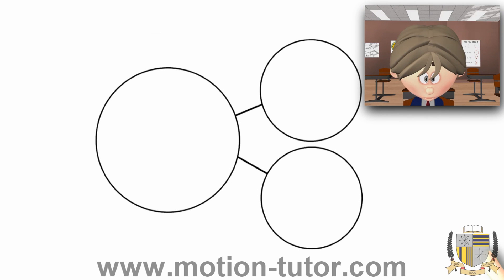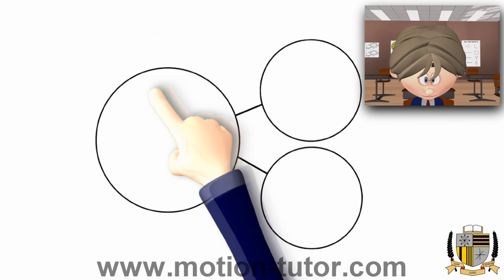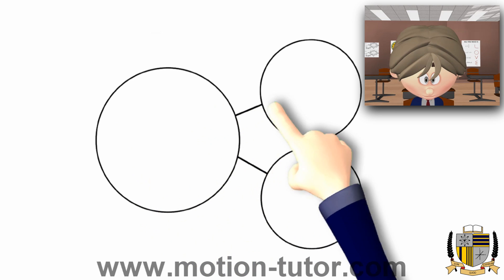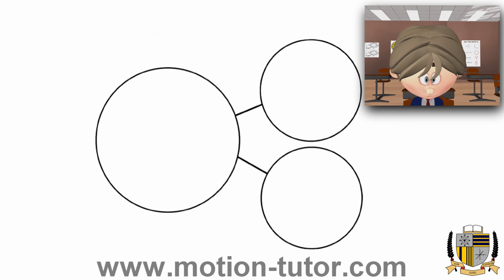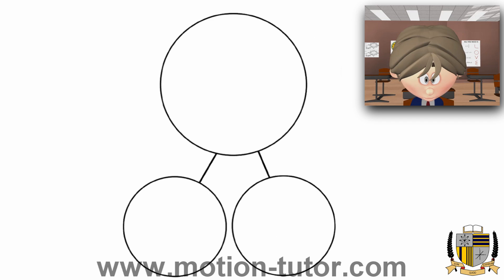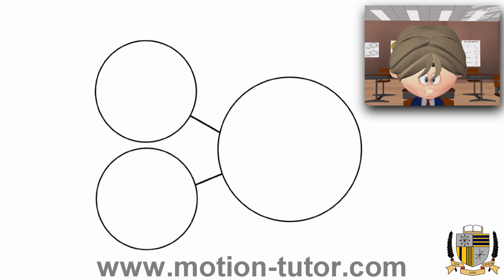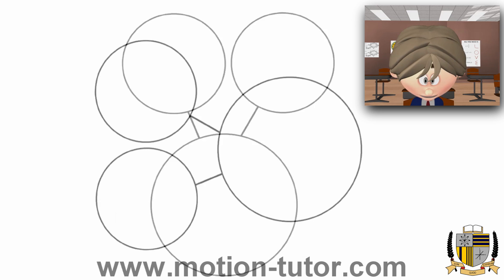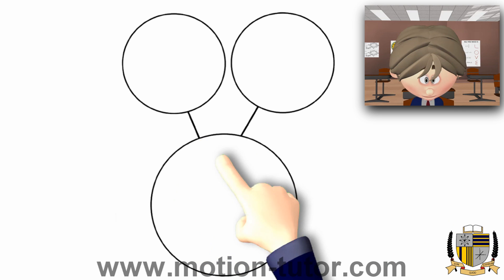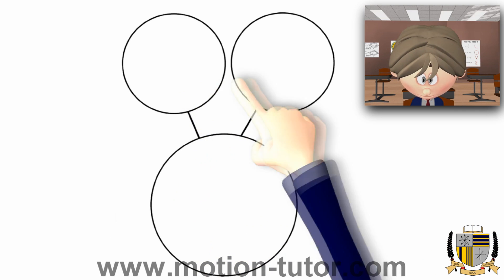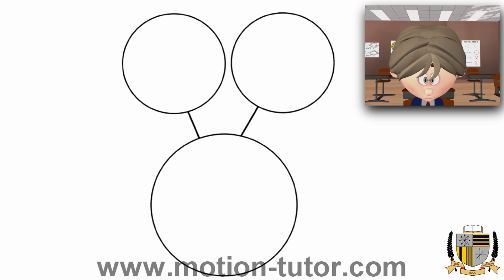Okay, number bonds. Number bonds usually look like this, where usually you have a big circle and you have two little circles connecting to it. They sometimes will look like this, sometimes like this, sometimes like this. Again, we have a big circle and little circles connected to them.